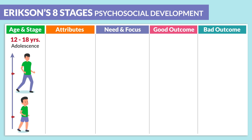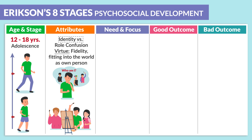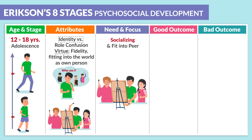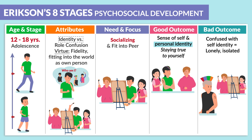The next age group is 12 to 18 years of age — our adolescents. The attributes are identity versus role confusion. The virtue is fidelity, or fitting into the world as their own person, finding themselves as a teenager. The need and focus — a big one here — is socialization and fitting into peer groups. The good outcome, as mentioned by Kaplan, is a sense of self and personal identity. The bad outcome is confusion with self-identity, leading to loneliness and isolation.